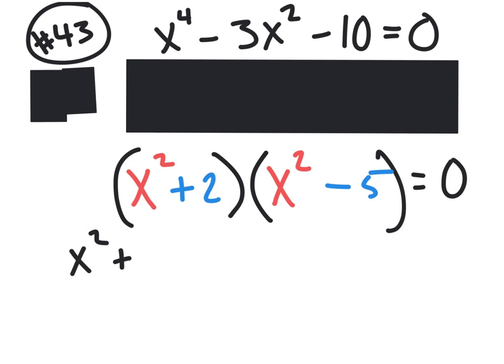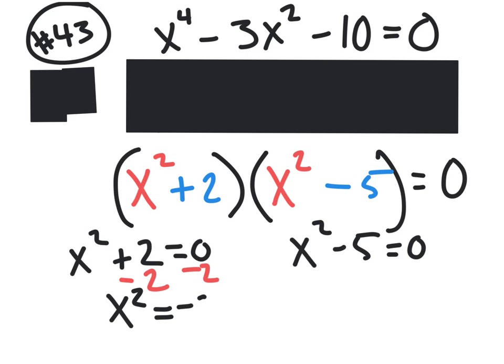x squared plus 2 equals 0. x squared minus 5 equals 0. That's with the 0 product property. And now we solve the way we would normally solve. On the left equation, you subtract 2, subtract 2, you're going to have x squared equals negative 2.